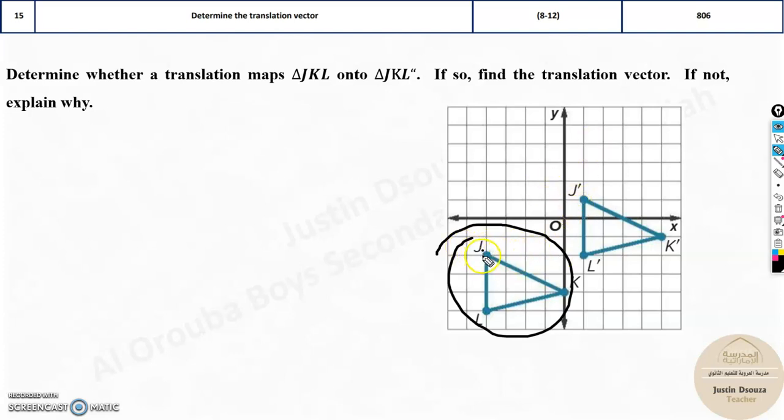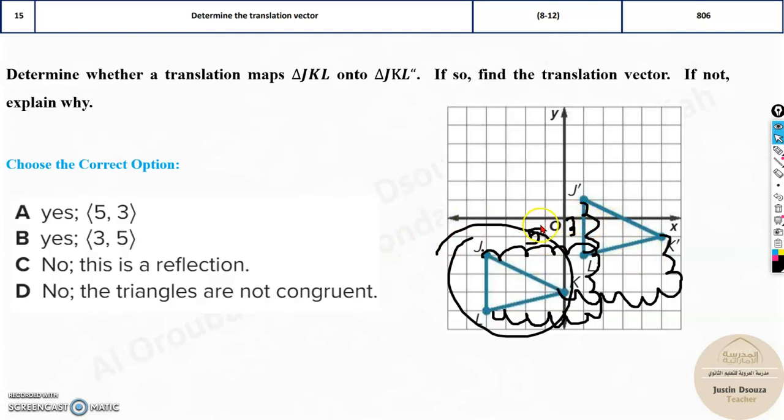The translation is same at all the points. What I mean is if this is a translation, then the movement at J to the new point J is 5 in the x-axis and 3 in the y-axis. It must be same over here with K. 5, 3 and 5, 3. That will be the same. So yes, this is translation.